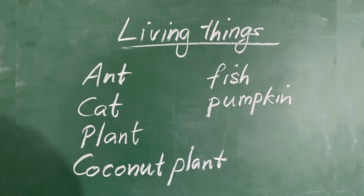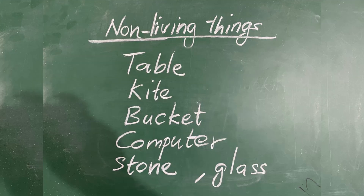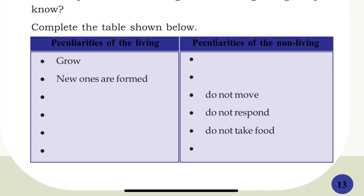The living things in this picture are cat, plant, coconut plant, fish, and pumpkin. The non-living things are table, kite, bucket, computer, stone, and glass. Observe your surroundings and find out more living things and non-living things. Write this into your notebook. This is the first activity. Look at this table: peculiarities of living things and peculiarities of non-living things.